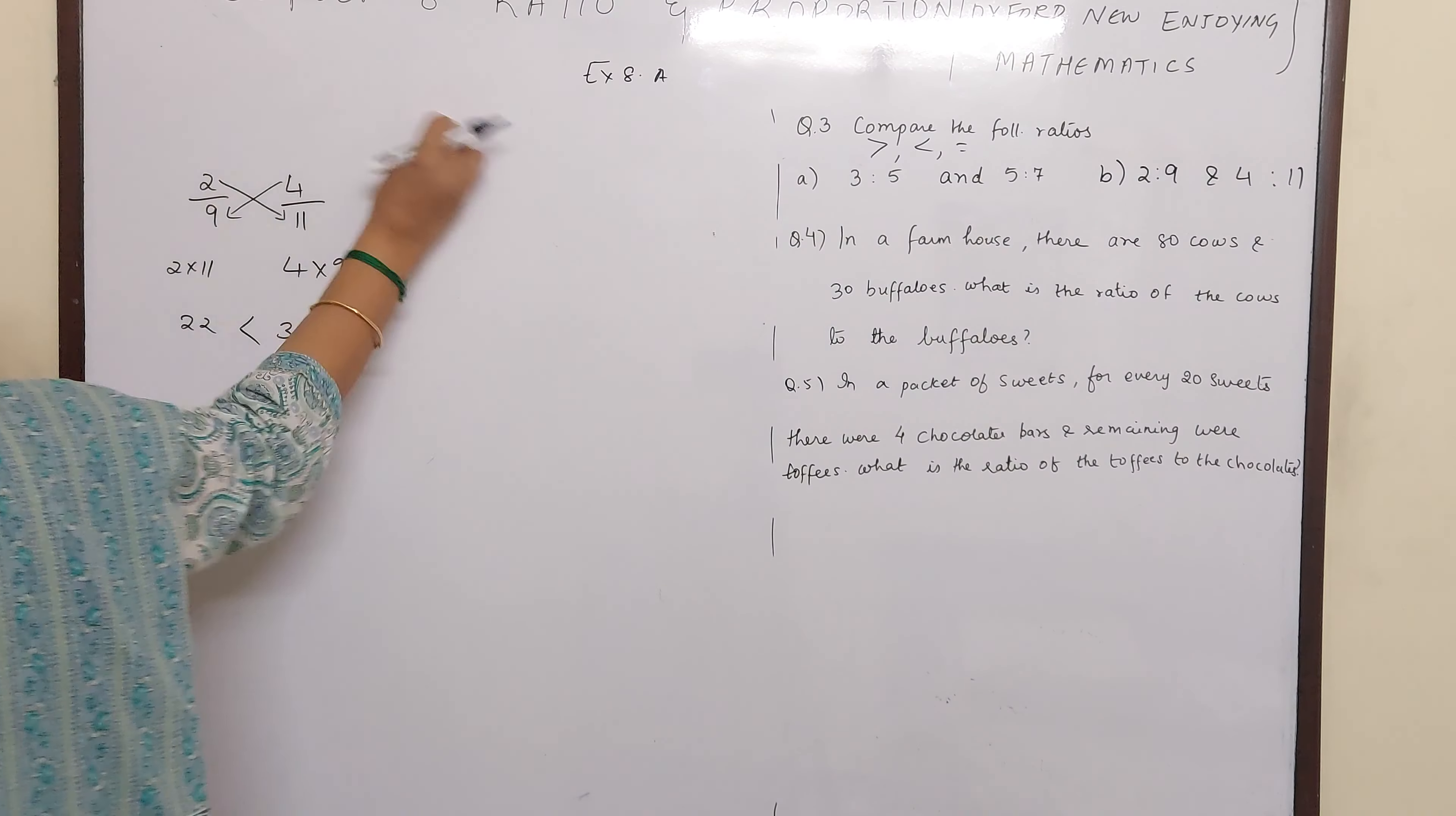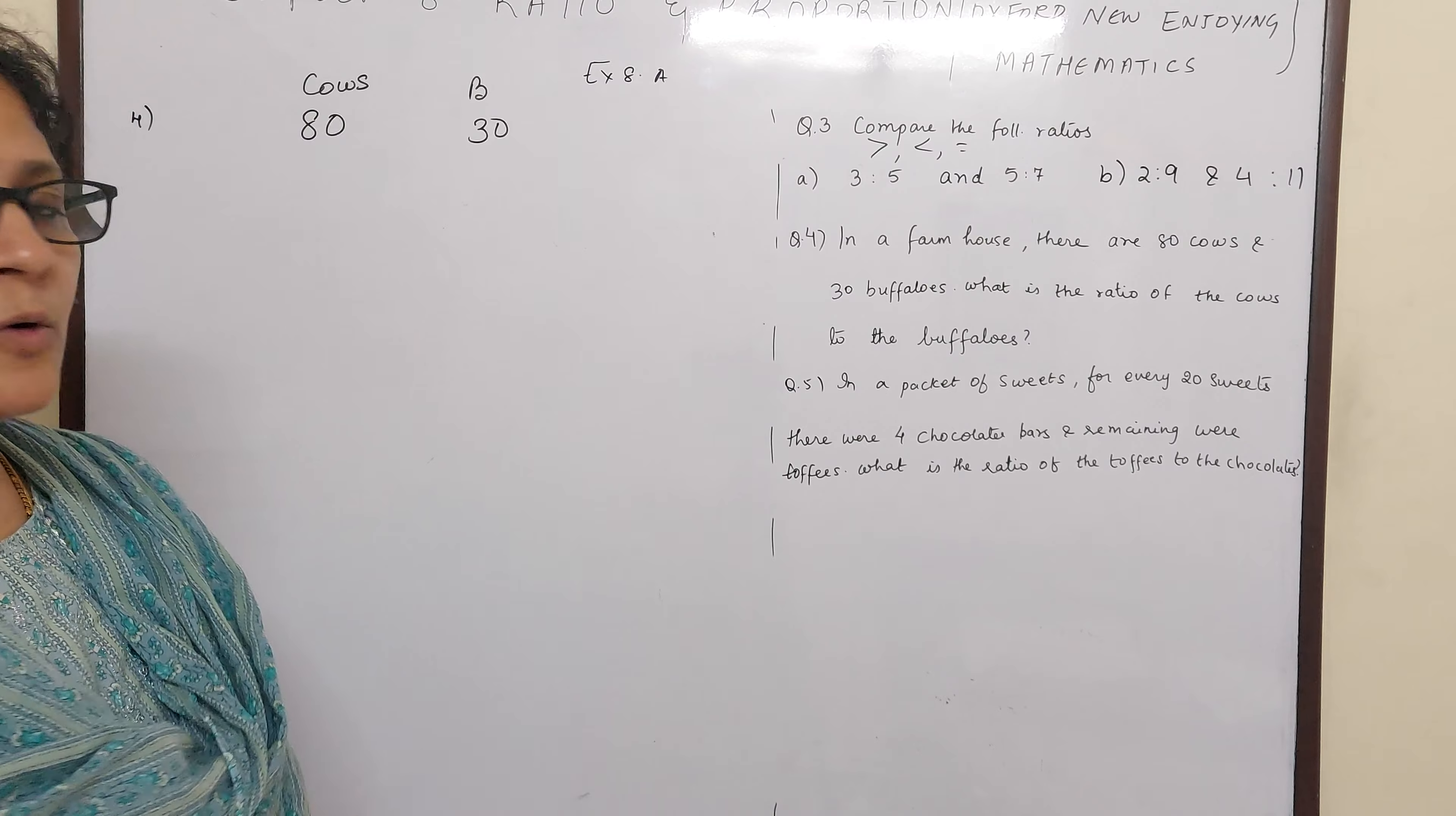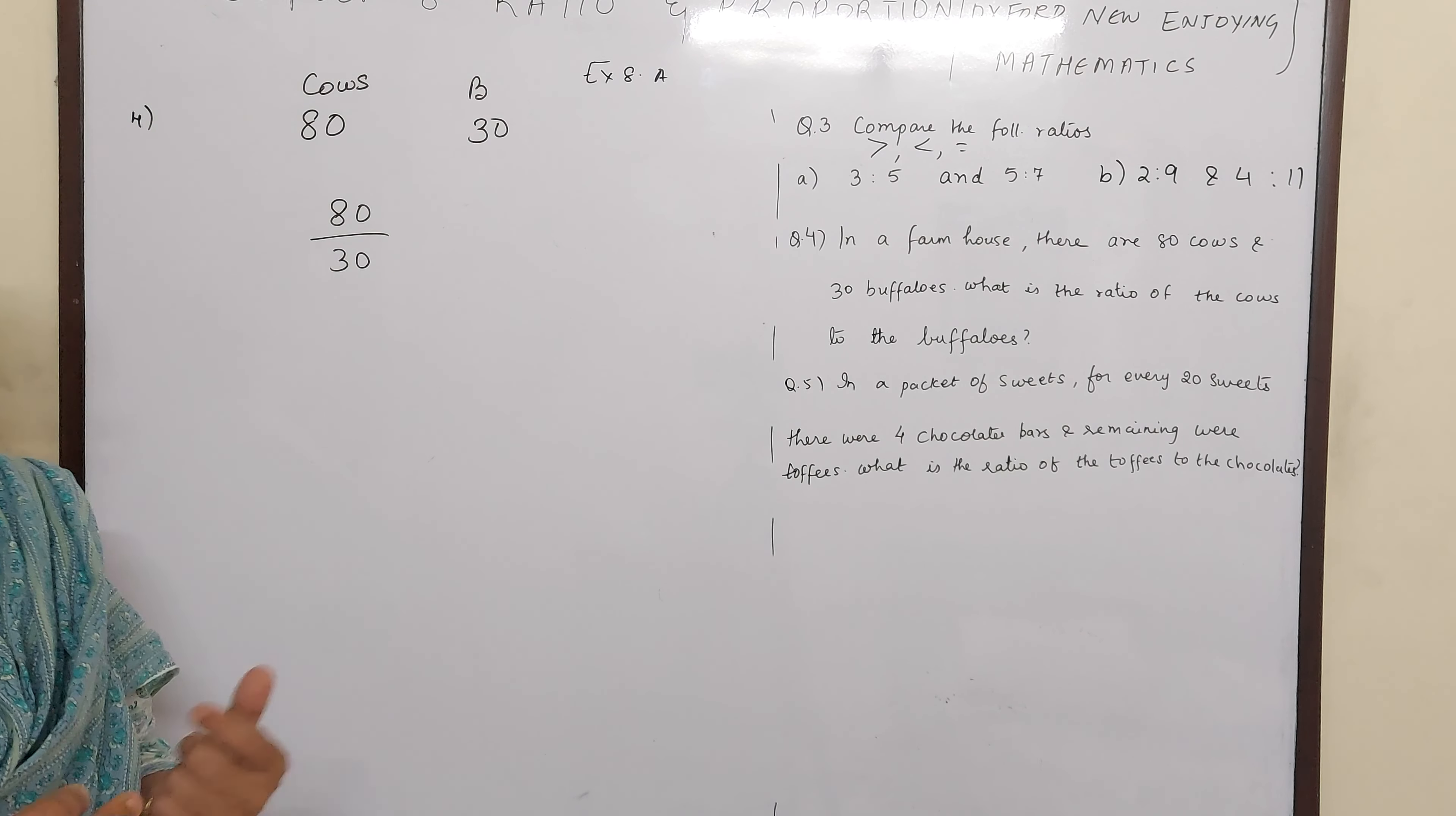Question number 4. In a farmhouse there are 80 cows and 30 buffalos. So there are 80 cows and 30 buffalos. What is the ratio of the cows to the buffalos? Now you might think they are not in the same unit. But they have asked the question itself is ratio of cows to buffalos. So you don't have to worry.